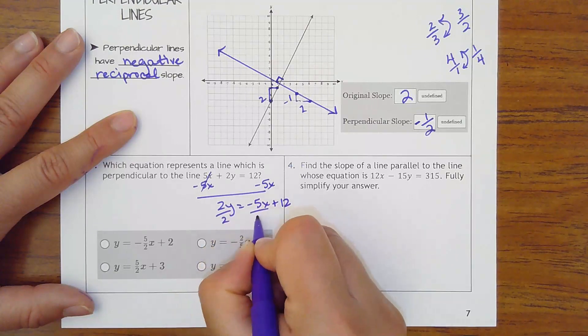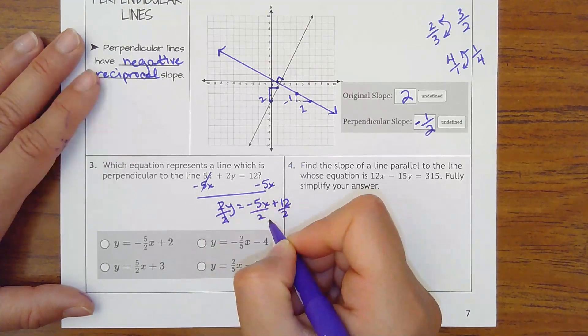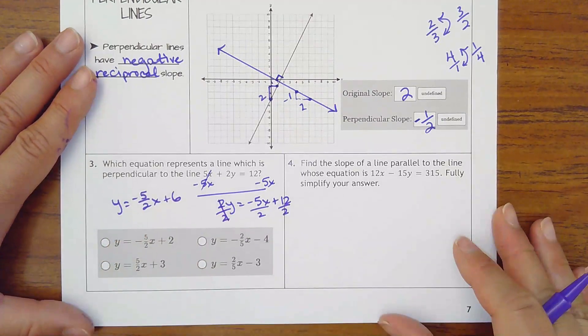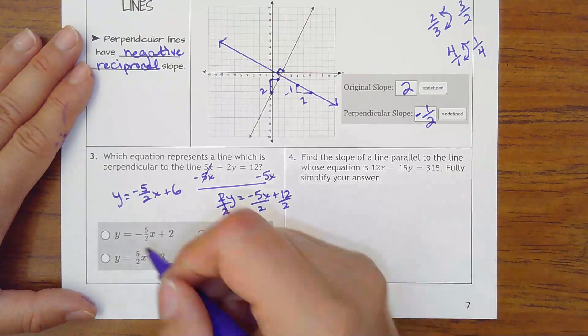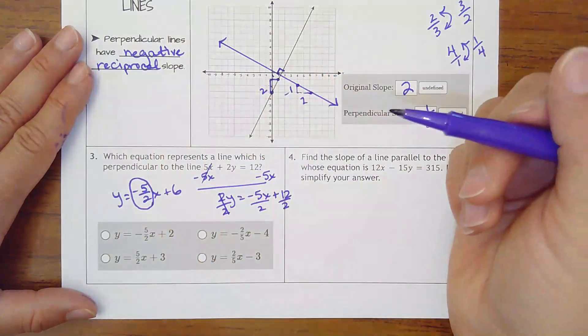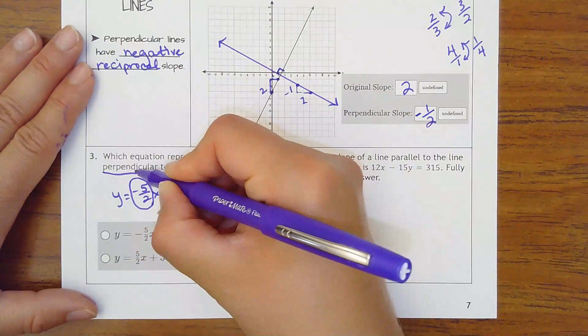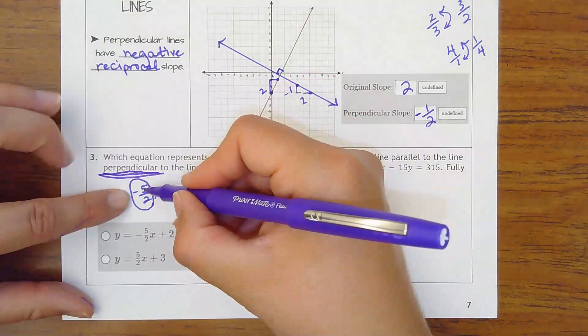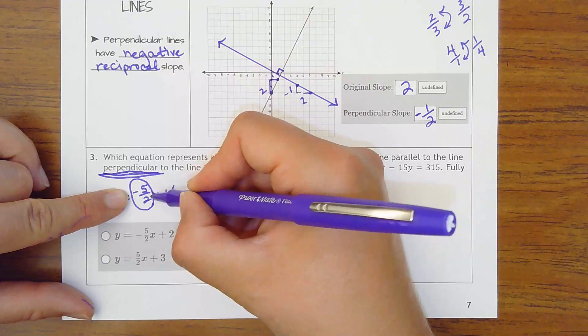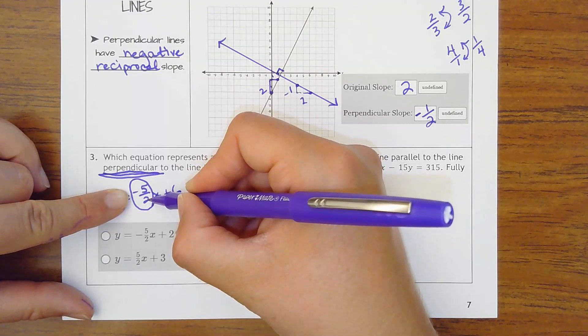Divide everything by 2. So I get y equals negative 5 halves x plus 6. What is the slope of this line? It's negative 5 halves. So if I want perpendicular to this, I'm going to have to have a number be positive and reciprocated. 5 over 2 becomes 2 fifths.